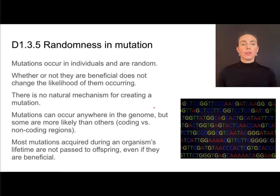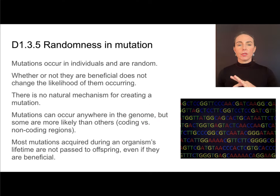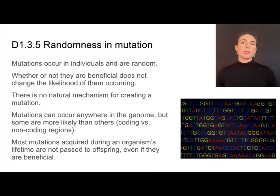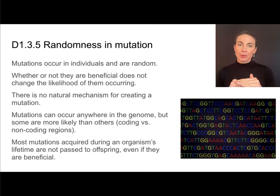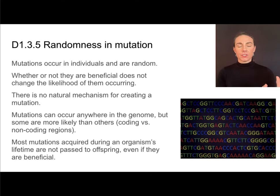Mutations can occur anywhere in the genome, but some are more likely to occur than others. If we think about coding versus non-coding regions, they're going to have very different effects. Most mutations that occur during an organism's lifetime are not passed to offspring. Even if I do have a beneficial mutation, unless it's in some of my cells that produce gametes, that mutation will not be passed along to my offspring.